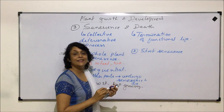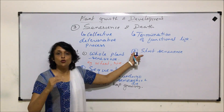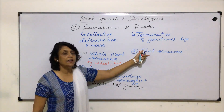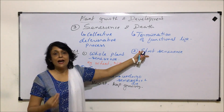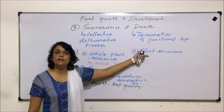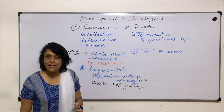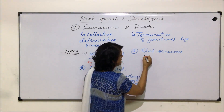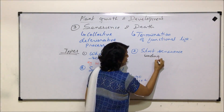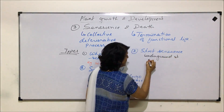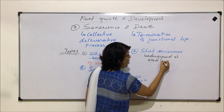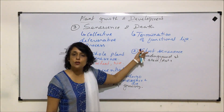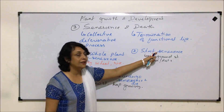The third type is shoot senescence. As the name tells us, it is only the shoot part — the part of the plant above ground — that undergoes senescence and dies. The underground part, which could be the stem or the roots, survives. So it is only the shoot which shows senescence, while underground structures like underground stems or roots survive.